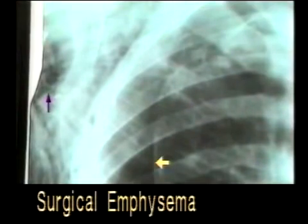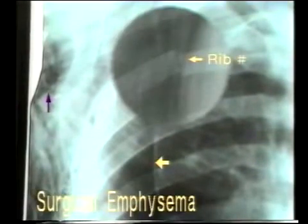Now, a careful inspection of all the ribs will reveal a rib fracture which has caused the pleural injury and air leak.